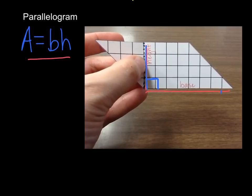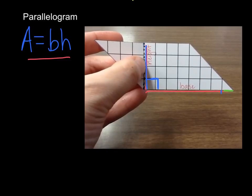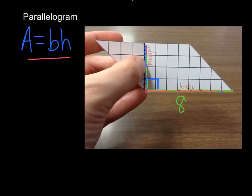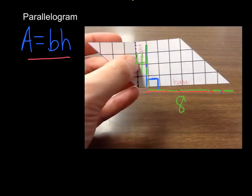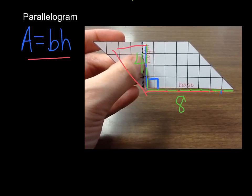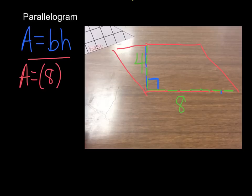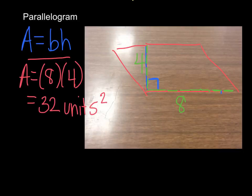The base is 8 units and the height is 4 units — remember, we're counting the units, not the squares. Plug in: area equals 8 times 4, so the area is 32 units squared. Make sure you've got that one written down.